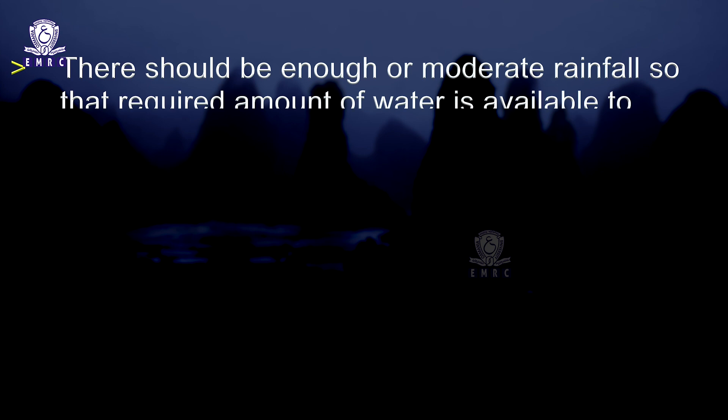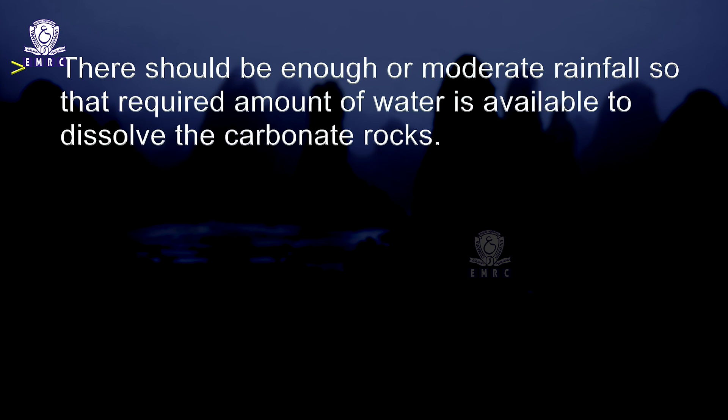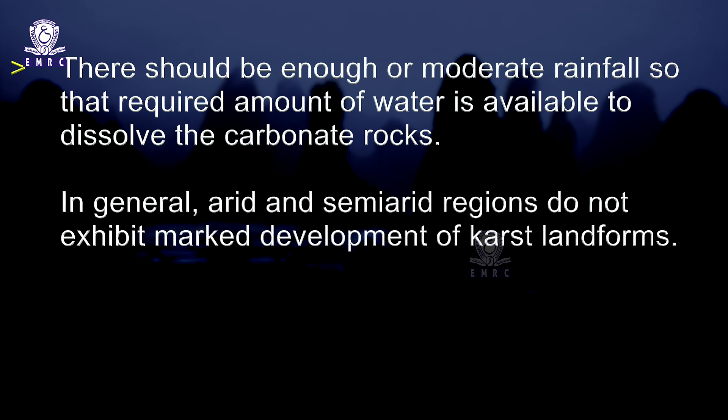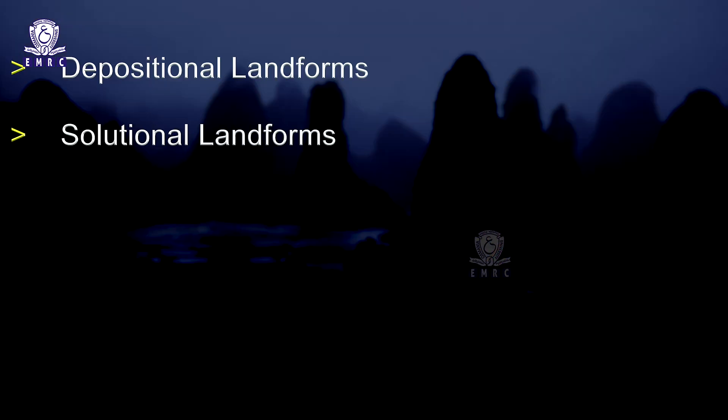The fifth condition is that there should be enough or moderate rainfall so that the required amount of water is available to dissolve the carbonate rocks. In general, arid and semi-arid regions do not exhibit marked development of karst landforms. These favourable factors give rise to erosion and deposition, which in turn gives rise to a distinctive type of karst landform. Karst topography is characterised by both depositional landforms and solutional landforms.